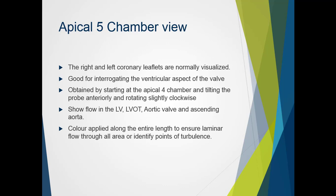The apical five chamber view normally visualises the right and left coronary leaflets. This view is good for interrogating the ventricular aspect of the valve, useful when artefacts obstruct the parasternal window. It is best obtained by starting at the apical four chamber view, tilting the probe slightly anteriorly and rotating slightly clockwise. The sonographer aims to open up the view to show flow in the LV, the left ventricular outflow tract, the aortic valve, and the ascending aorta. Colour is then applied along the entire line of sight to show laminar flow and identify any points of turbulence. Care is needed to ensure frame rates don't drop too low when imaging deep and applying colour. This view is also good for obtaining LVOT and aortic valve velocities as flow may be parallel with the cursor alignment.